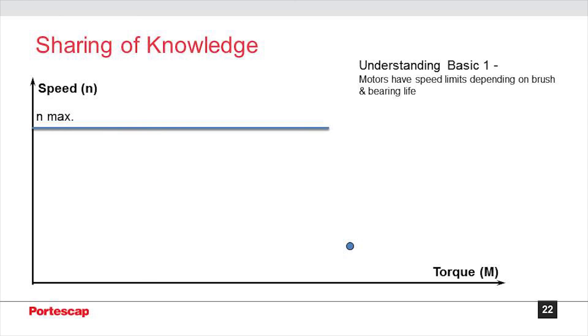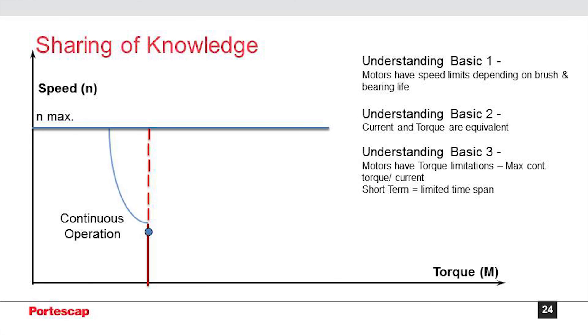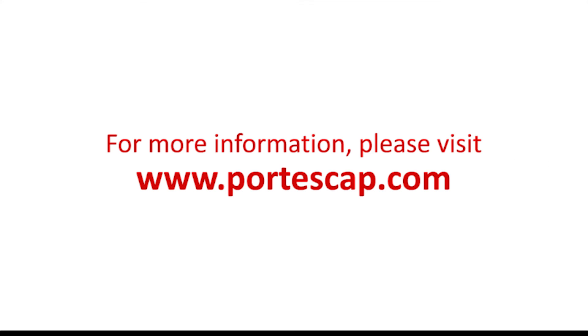Some points to summarize our understanding of the speed torque curves for DC motors. One being that the motors have speed limits depending on the brush and bearing life. It should also be noted that the motor's torque and current are in proportion to one another, with the torque constant being the proportionality factor between them. Next, motors have torque limits and their max values are provided in the catalog. In addition, they also have temporary working ranges for short-term operation. The time that limits the short-term operation is known as the thermal time constant.